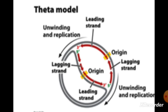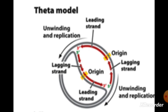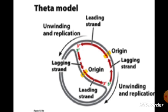Bidirectional replication occurs in prokaryotes and eukaryotes such as yeast, fruit fly, and mammals. Unidirectional replication is found in mitochondria of invertebrates.